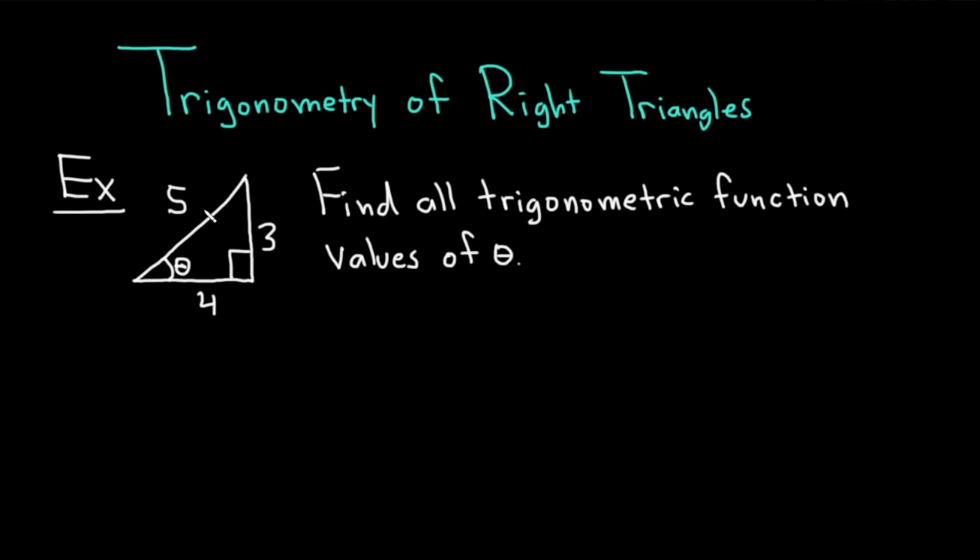Let's start with an example. We have a right triangle here with sides 3, 4, and 5, and the directions are to find all trigonometric function values of theta. Let's work through this solution. There's something very useful we can use to solve this problem.